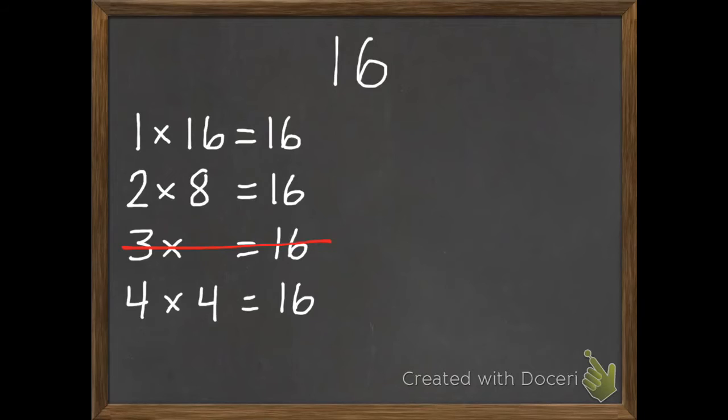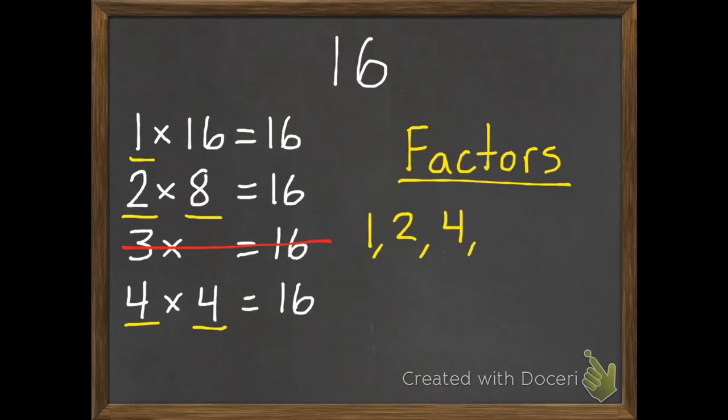I could keep going to 5, 6, 7, 8, 9, all the way to 16. But we're going to just start getting the opposite of what we already have. So I'm going to get to 8 times 2 and 16 times 1. And we already know that those are factors that work. So I'm going to write all the factors that I found, all the numbers that you can multiply together to get 16. Once again, I'm going to just go in order. So there's 1, 2, 4. I only need to write it once.